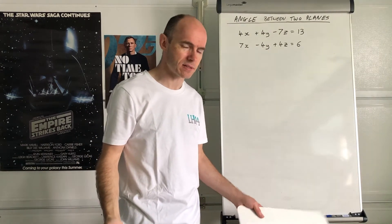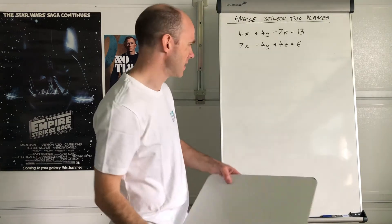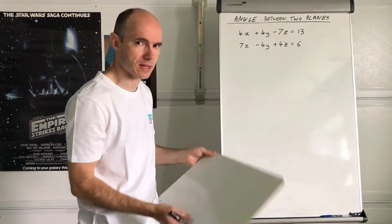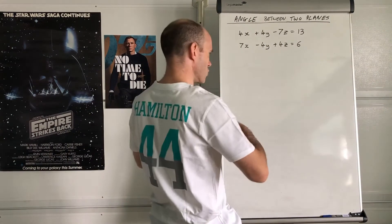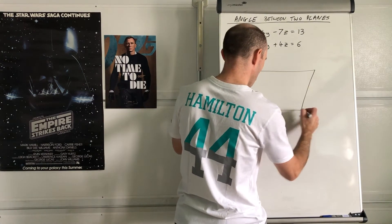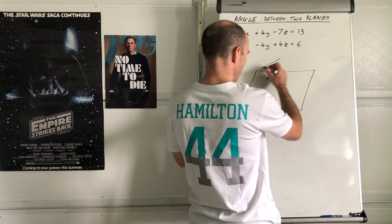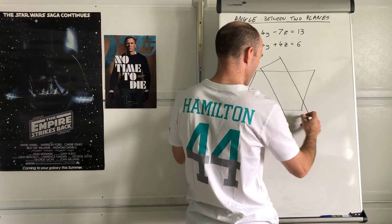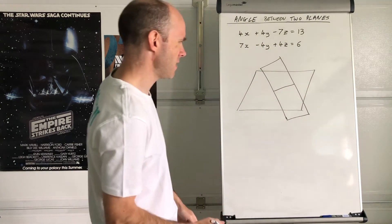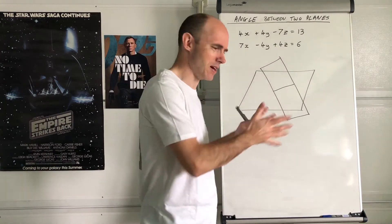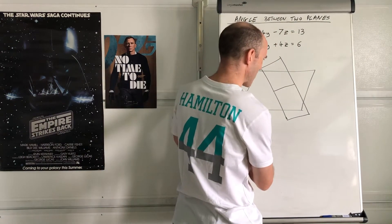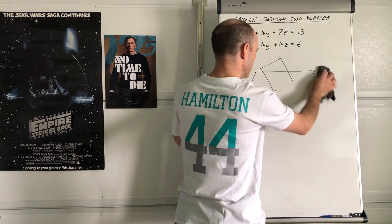When two planes intersect, they intersect at a line. Think about it — this is one plane, this is another; where they intersect there's going to be a line common to both of them, meeting in one particular line. It's very difficult to draw. Even I've not mastered the art of drawing two planes intersecting with each other, so you've got to kind of imagine it.